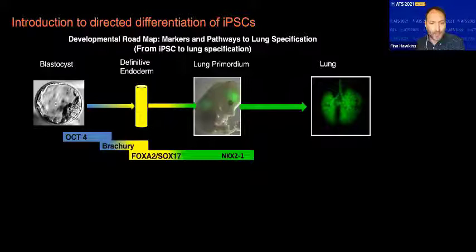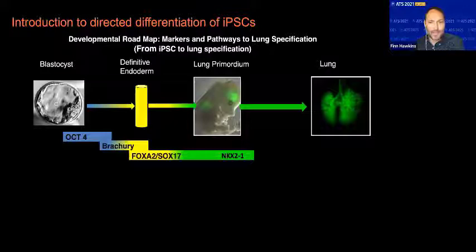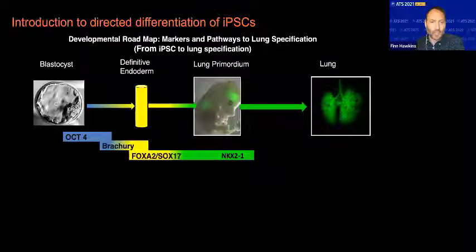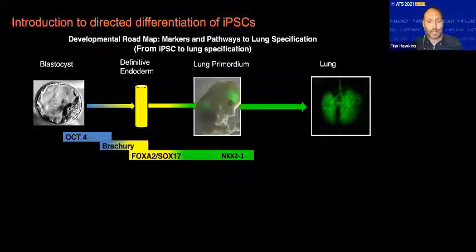For the lung, we have a very reductionist roadmap of how an iPSC might get to a mature lung epithelial cell type. Our iPSC cells are akin to the pluripotent cells in the inner cell mass of the blastocyst embryo. As they differentiate and go through gastrulation, definitive endoderm is the first major milestone, identified by transcription factors FOXA2 and SOX17. The lung will first be identified in the ventral foregut endoderm by just a handful of cells that express the key transcription factor NKX2-1.